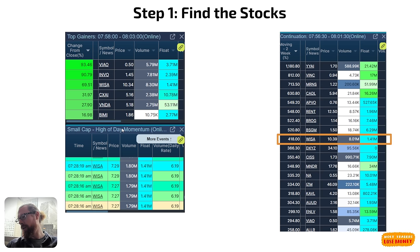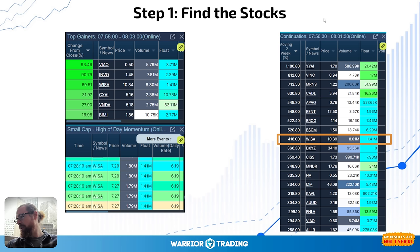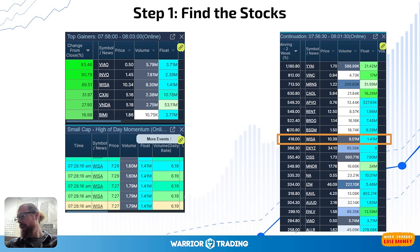Step one: how do I find the stocks? I find these on my scanners, and WISA I found on three different scanners. It was on my continuation scanner because it has had a 400% plus range in the last two weeks. Stocks that have big ranges like this I like to keep an eye on because they have the potential to give us continuation. It wasn't at the top of that scan, but it had the most volume of anything on the scan, which if you sort by volume is significant.